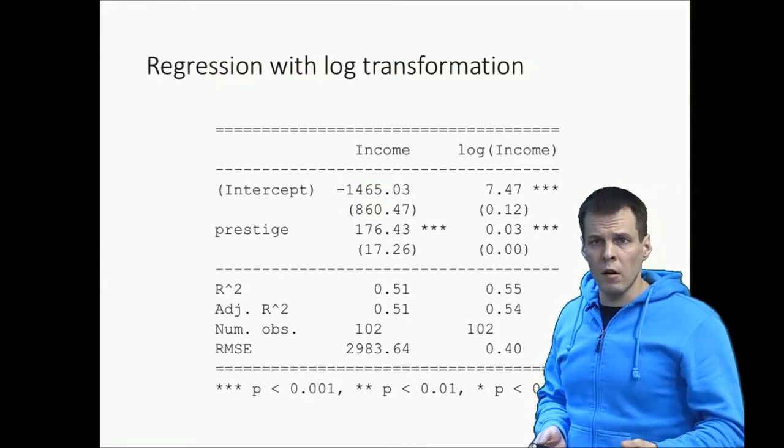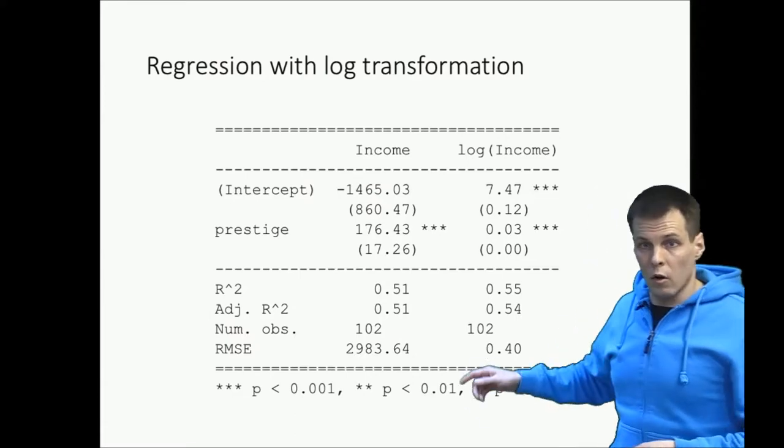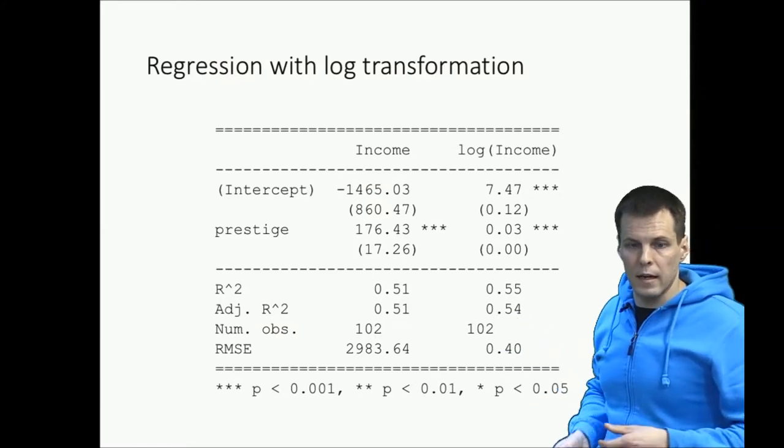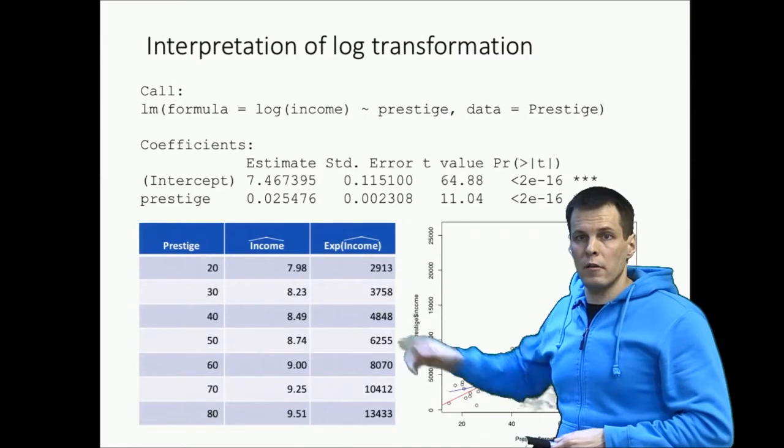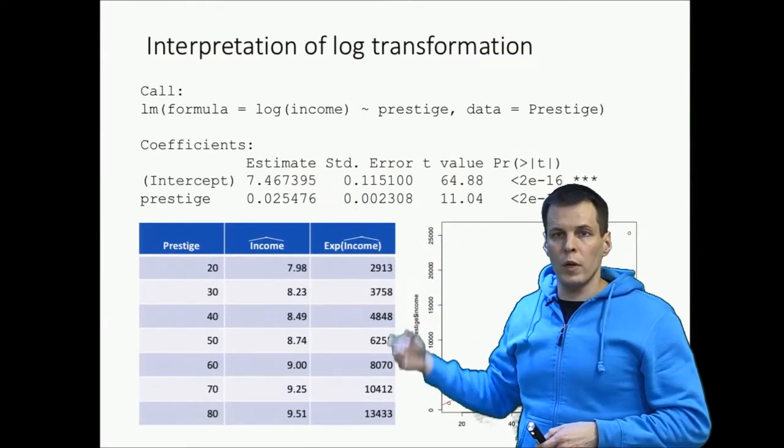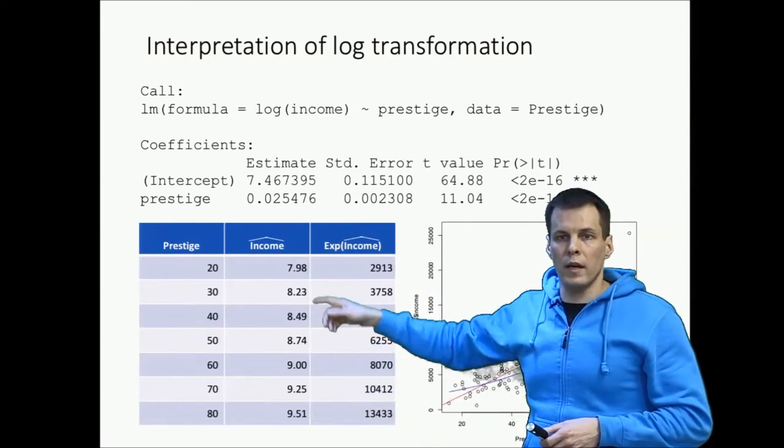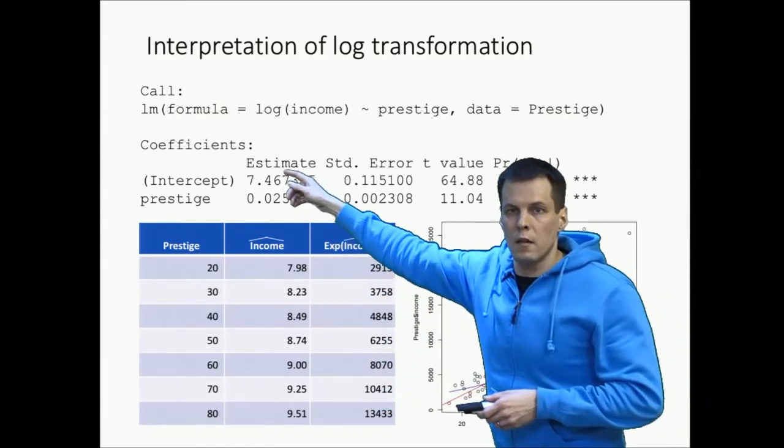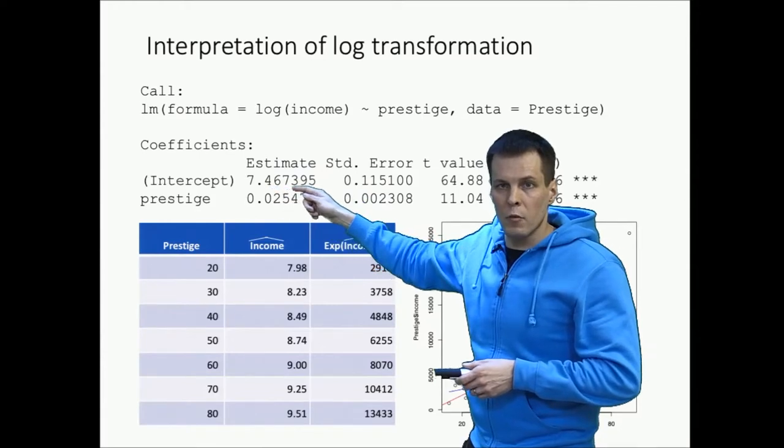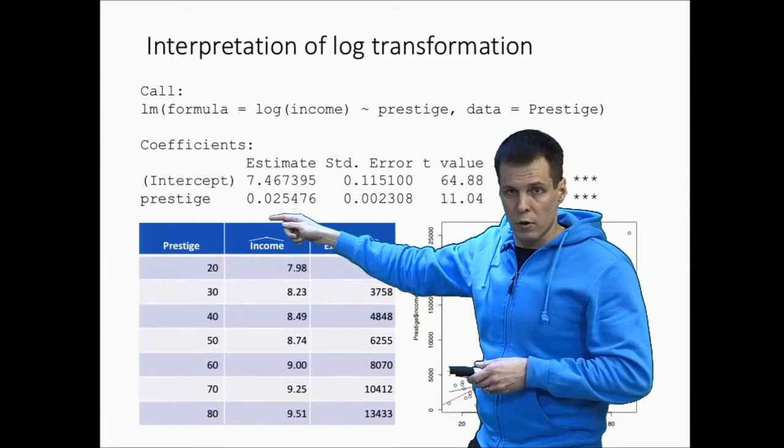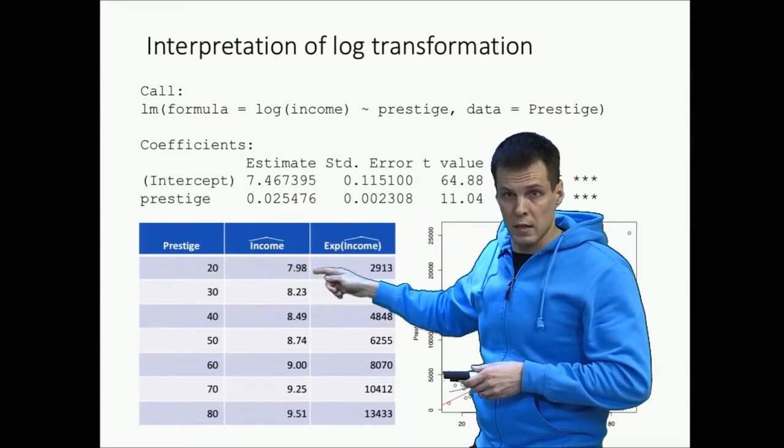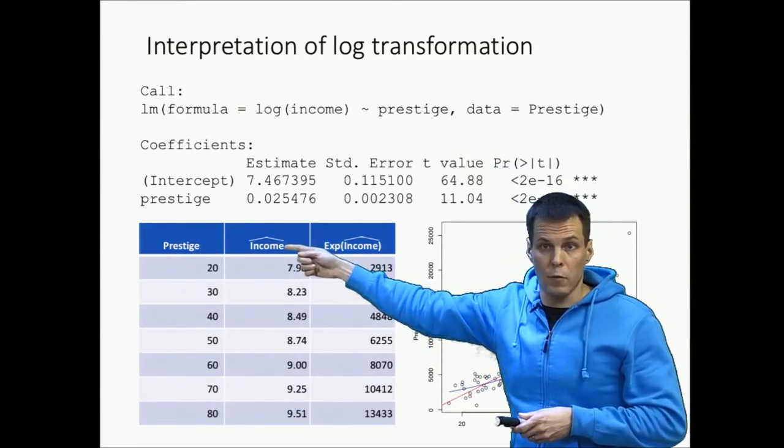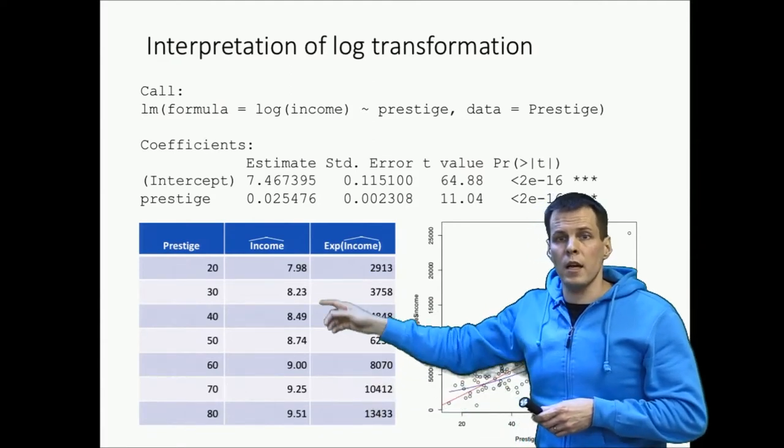So how do we interpret? There are two ways of interpreting the log transformation results. One is the general way of interpreting any nonlinear effects, and that is plotting. So you can do, here is the regression results for the log transferred model. What we do here is that we calculate the fitted values of the logarithm of income based on Prestige. So this is simply taking the formula, adding intercept 0.746 plus 0.02 times 20. So that provides us the fitted income.